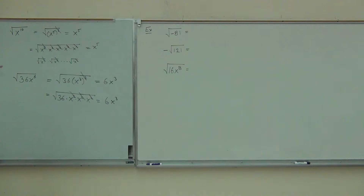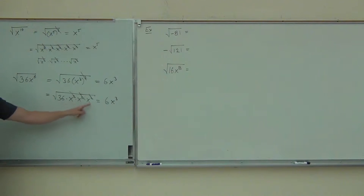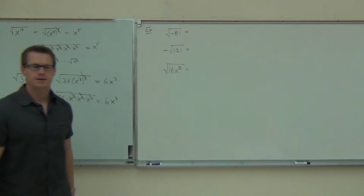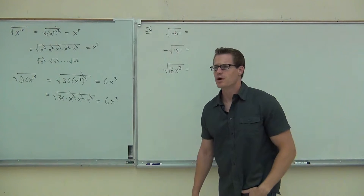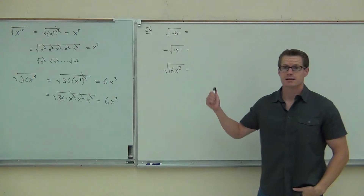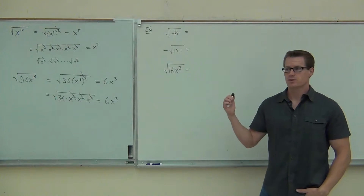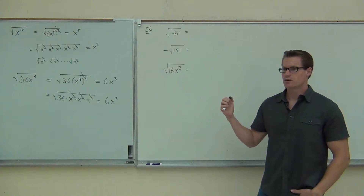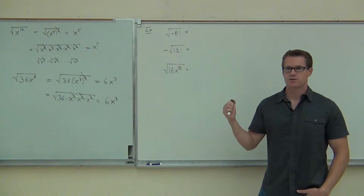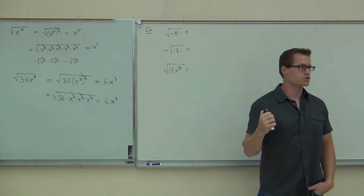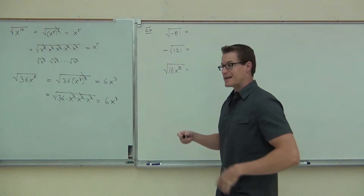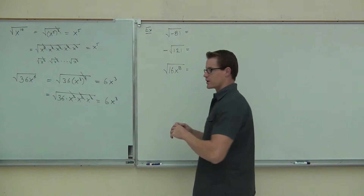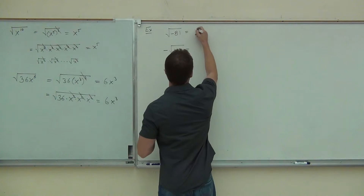Ultimately we're going to be doing this, or this, when we see these problems, most likely from here on out. So first one: square root of negative 81 — how much is that? No solution. We will have a solution on this in section 10.7 for sure, but right now we are doing real numbers, and we have no real solution.